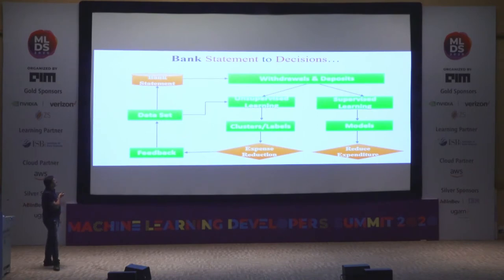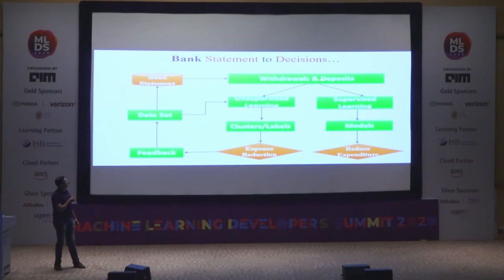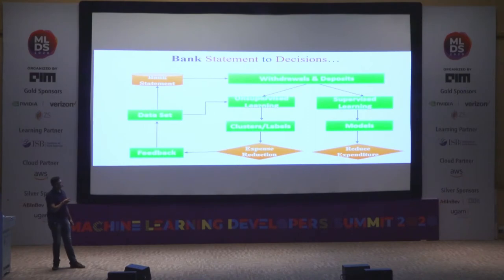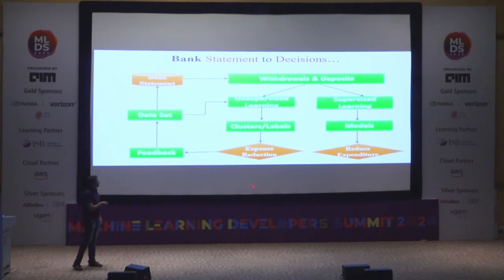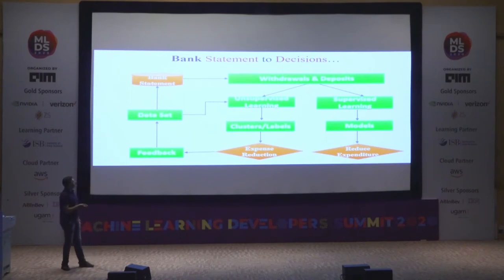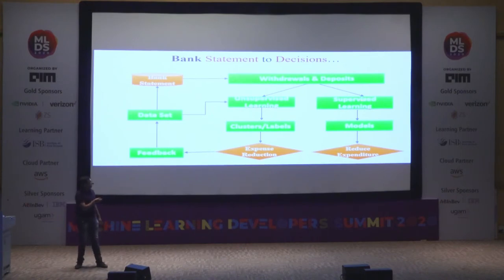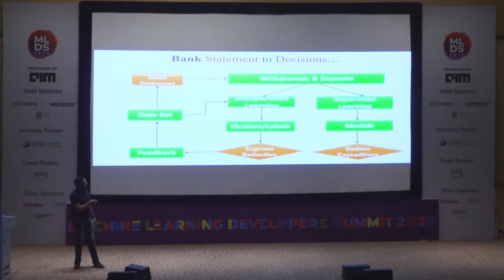Bank statements have key attributes — in machine learning terminology we call them features. We extract withdrawals and deposits, apply unsupervised learning, cluster the data, group it, and using Tableau we get good insights. Supervised learning is a long way to go from the perspective of classification between expense and income, which doesn't give much insight. There can be research done in that area, but my scope here is unsupervised learning.